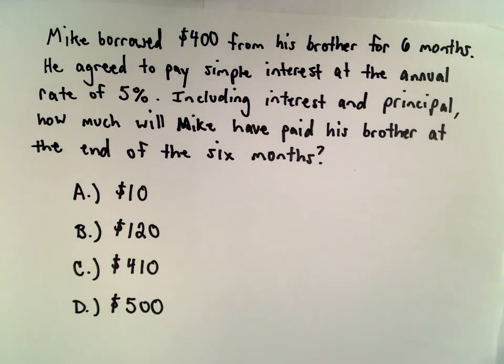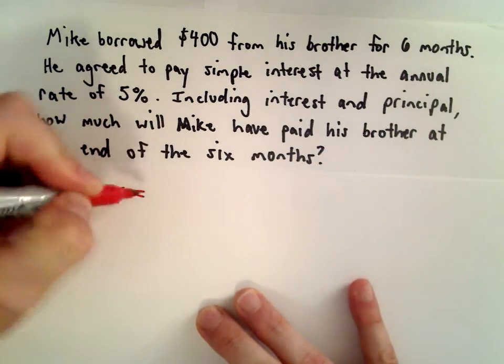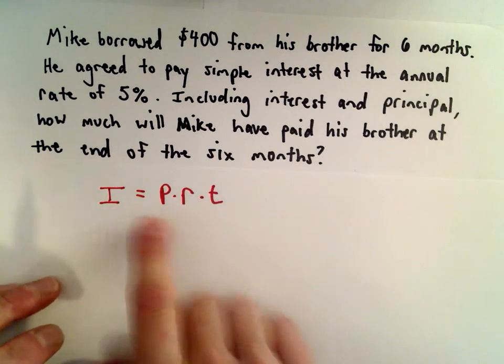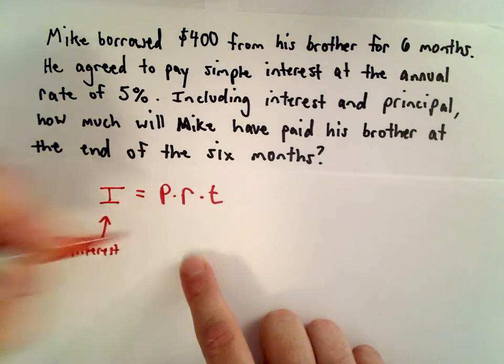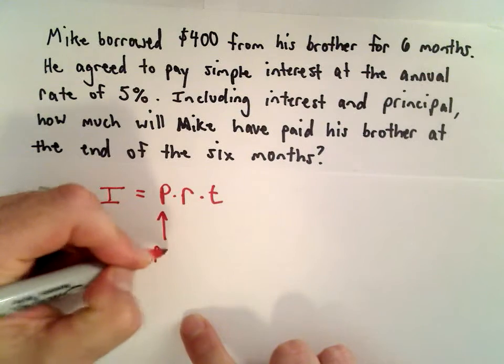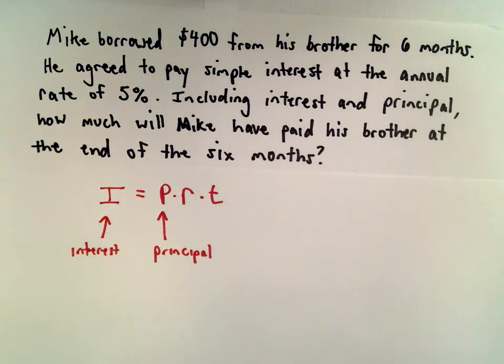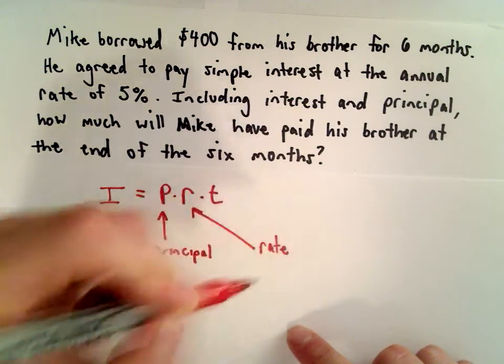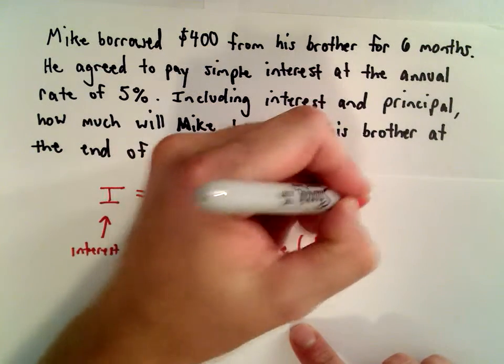On the GED, you'll be given a formula sheet, and one of the formulas will be for simple interest. The formula is I = P × R × T. I stands for the interest earned, P stands for the principal (that's the starting amount you borrow), R is the rate in percent form, and T is the time.